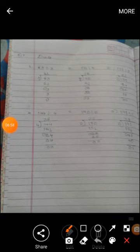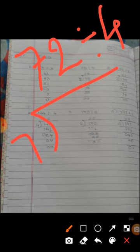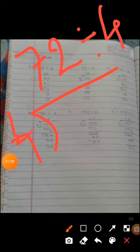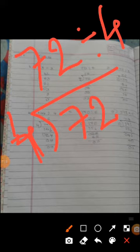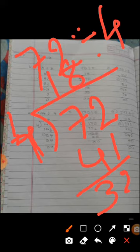Second one, 72 can be divisible by 4. 4 ones are 4. 7 minus 4 it become 3. You can take 2 here. Then 4 eights are 32. 32 minus 32 it become 0.